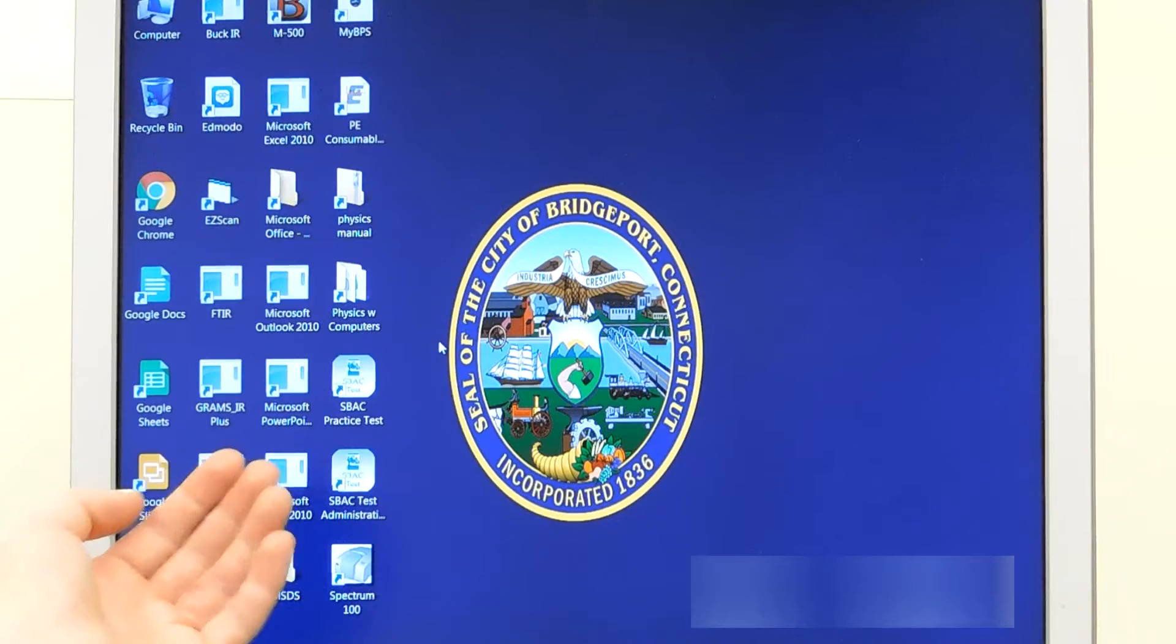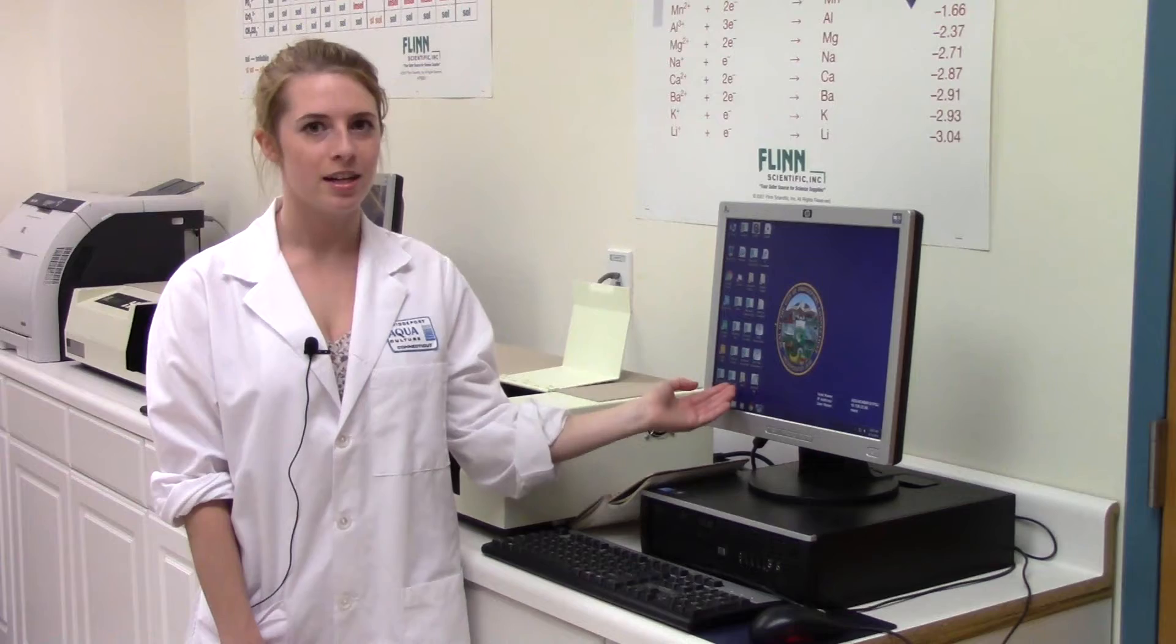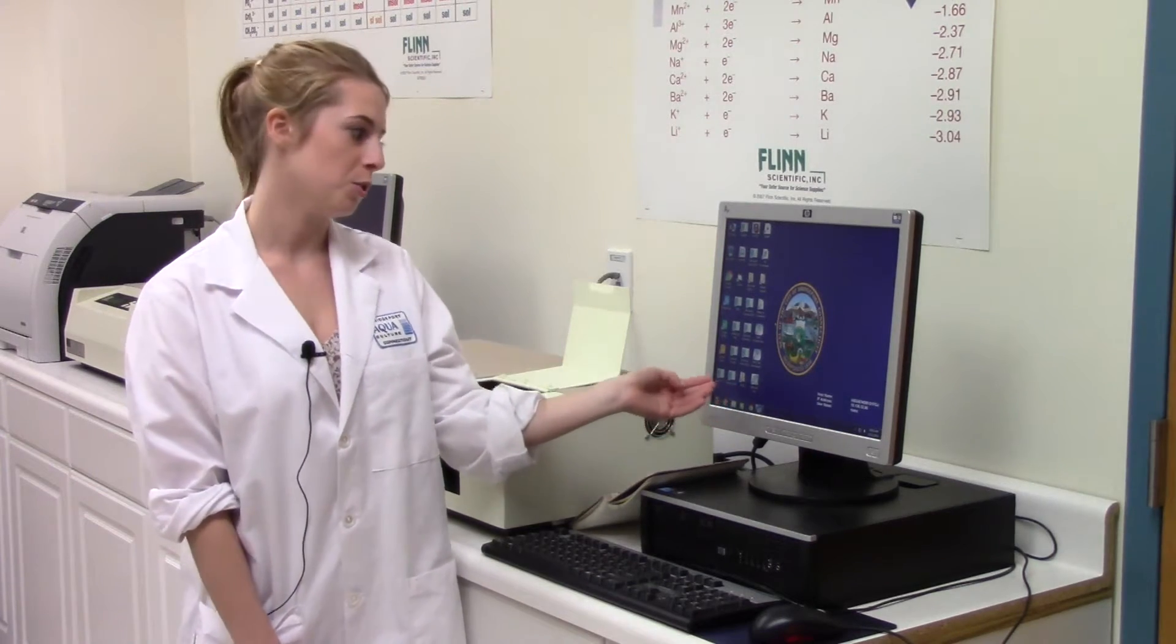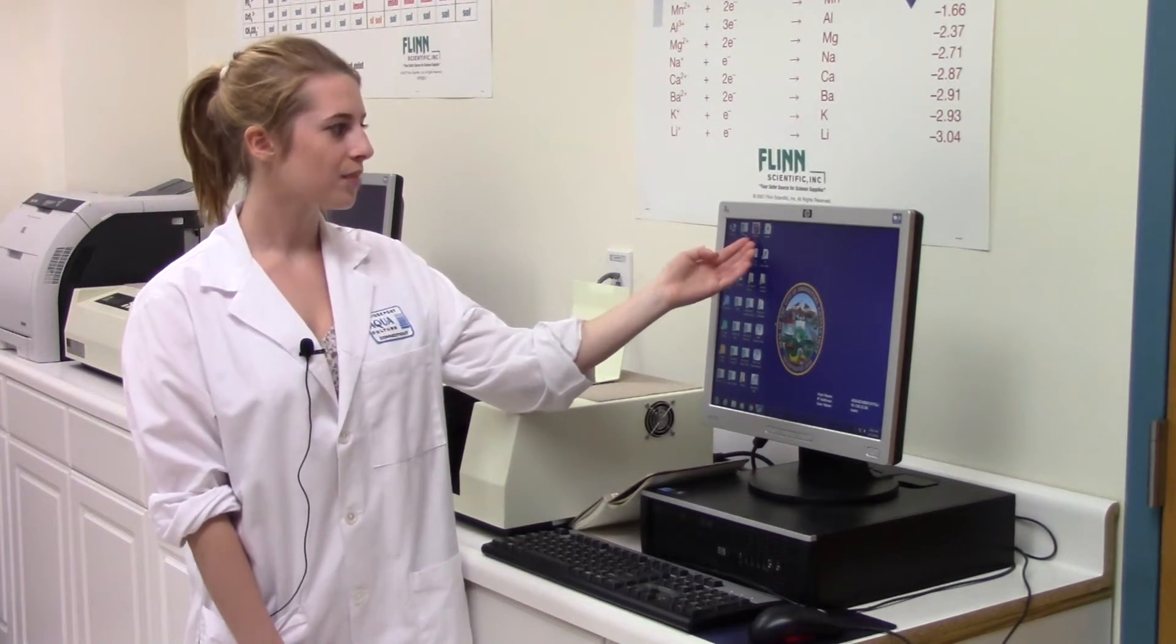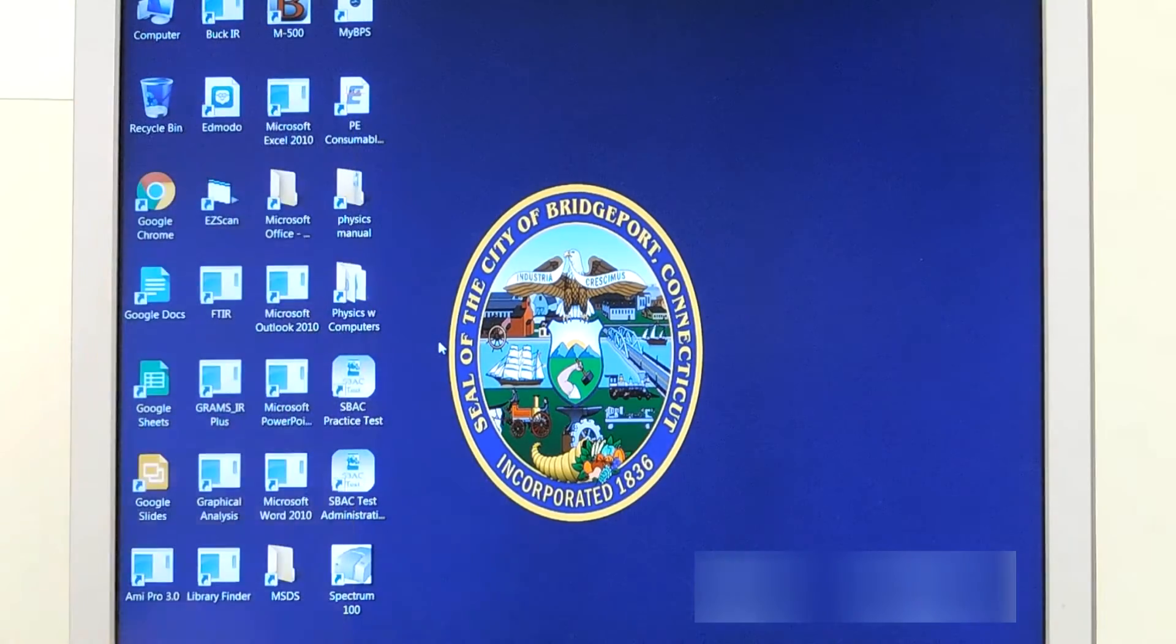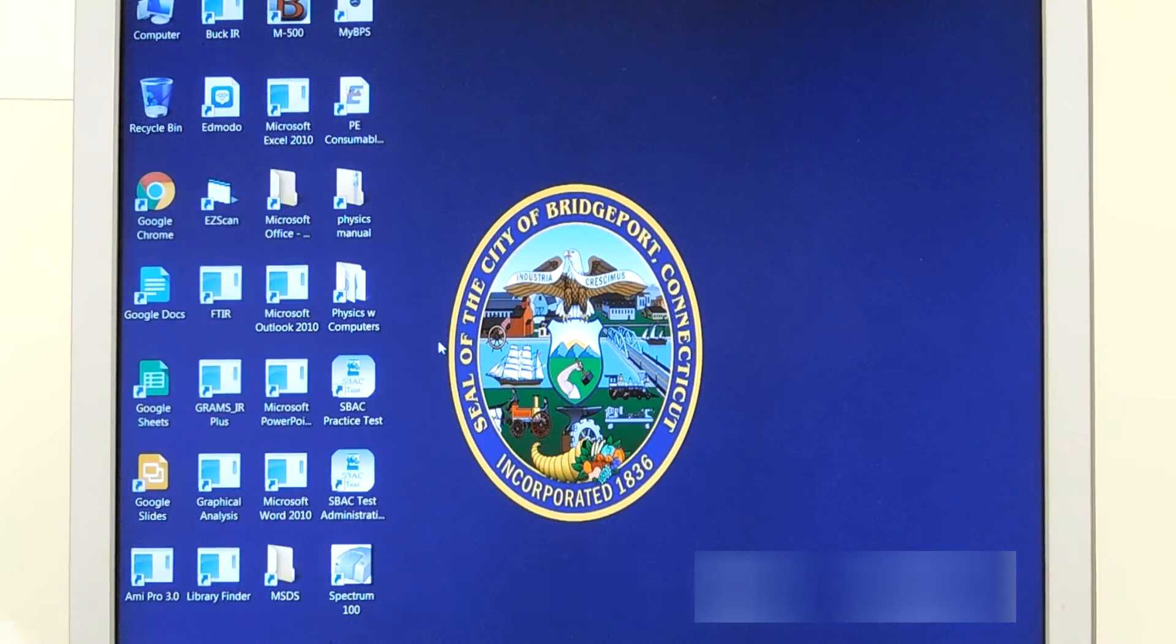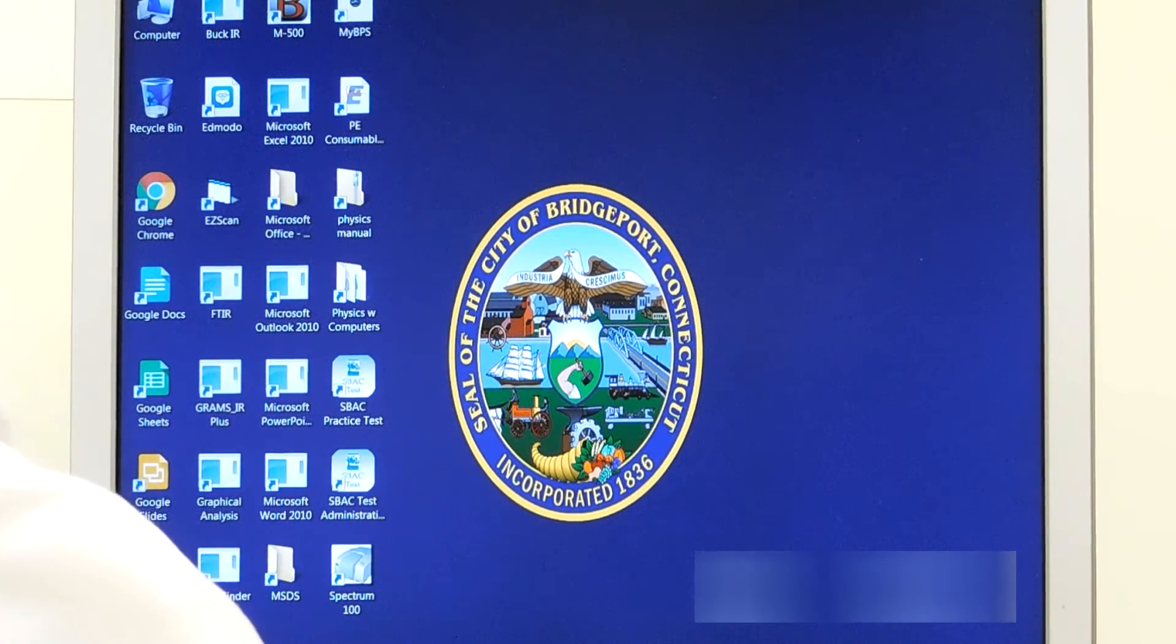After the instrument is configured, the next step is to set up the computer. First, open Library Finder. This will ensure you can save all the files you run through the instrument. Next you want to open up M500. This will let you run the instrument. After this is done, it will look something like this. This will ensure that you are ready to run the instrument.